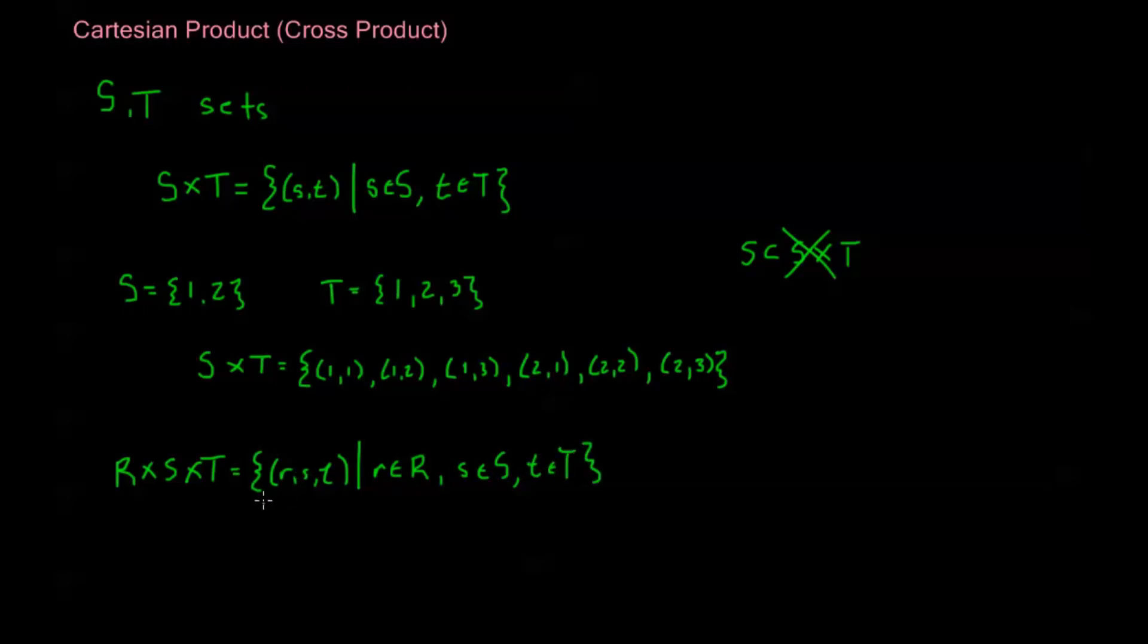And we can go as high as we want. This is the set of ordered triples. If I have four sets, I'd have ordered four tuples. And we can go to any number of sets, N, and we'll have a set of ordered N tuples composed from those sets in this way.